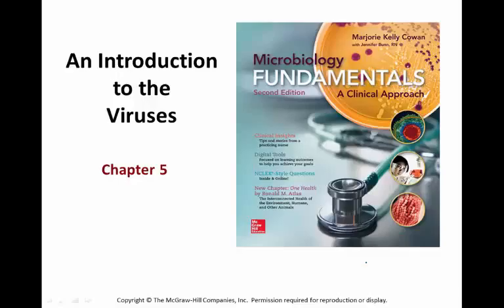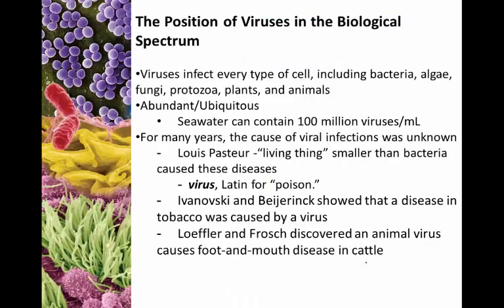Chapter five - we're going to talk about viruses today. I'm going to start with where viruses fit in and a little history. One thing we know: viruses infect every type of cell including bacteria, algae, fungi, protozoa, plants, animals - you name it. If it's alive, it can be infected by a virus. Do not misunderstand this to think that all viruses can infect all types of organisms. For every organism out there, there is a virus that can infect it. They are abundant and ubiquitous - meaning everywhere.